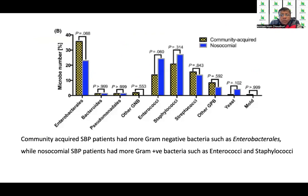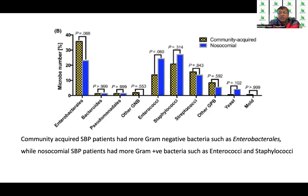Community-acquired SBP more often involves gram-negative bacteria like Enterobacteriaceae, whereas nosocomial SBP is more likely to involve gram-positive bacteria such as Enterococcus and Staphylococcus. It may therefore be meaningful to add additional drugs such as clindamycin, vancomycin, or teicoplanin for nosocomial coverage.